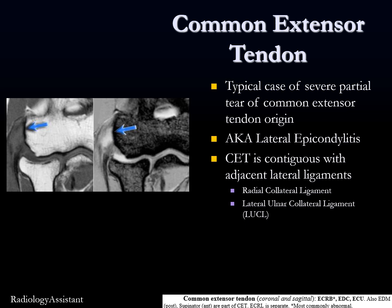Here's a typical case of severe partial tear of the common extensor tendon origin, also known as lateral epicondylitis or tennis elbow. One important note is that the common extensor tendon can be contiguous with the adjacent lateral ligaments — the radial collateral ligament and the LUCL. So at the deep margin of the tendon, there are the lateral capsular ligaments of the elbow, and these abnormalities can go together.